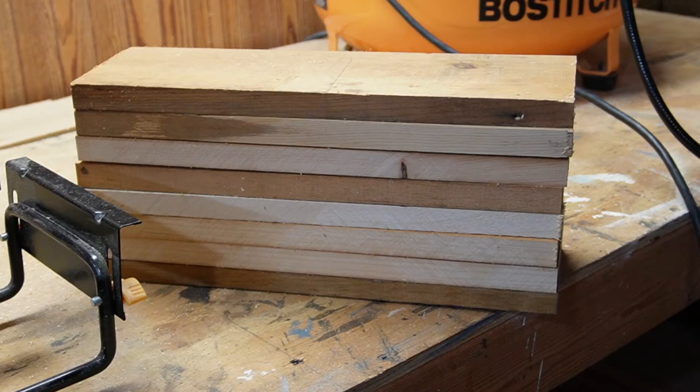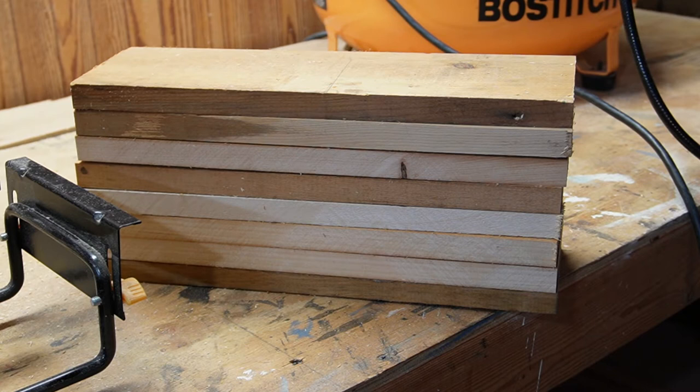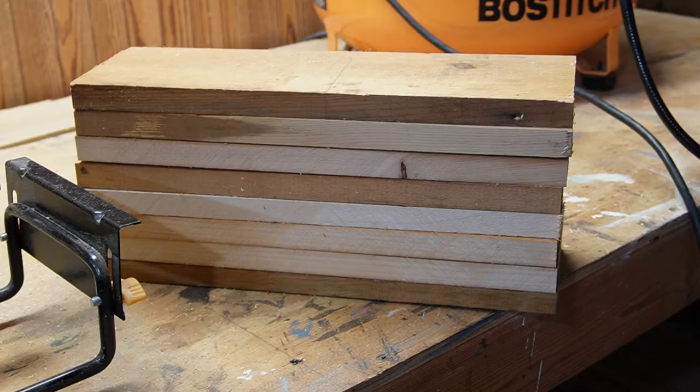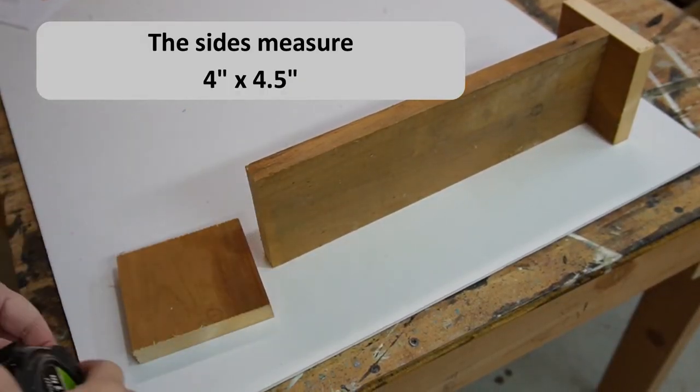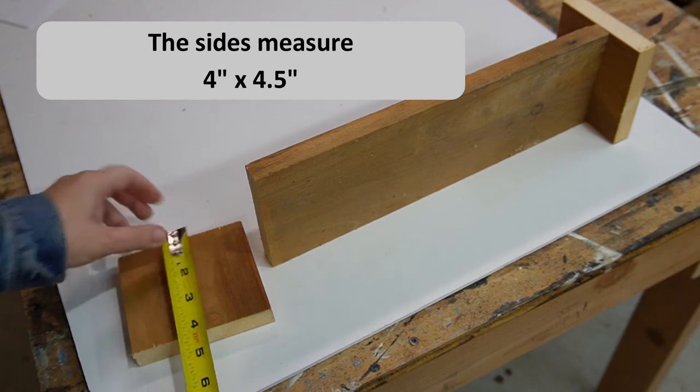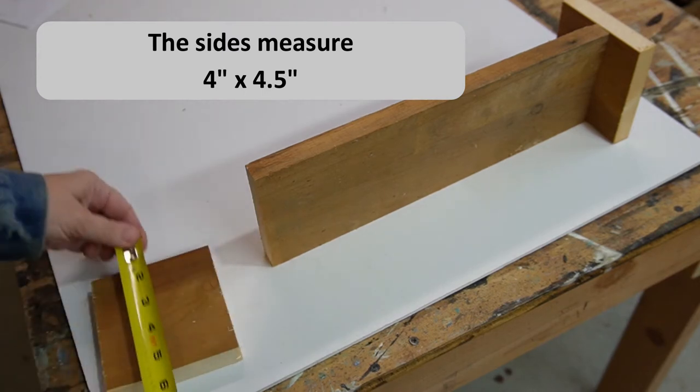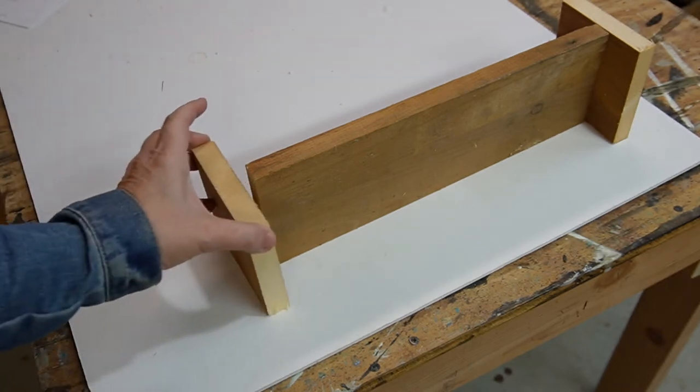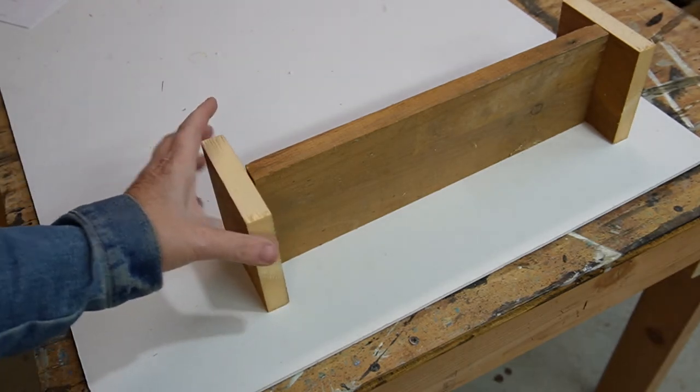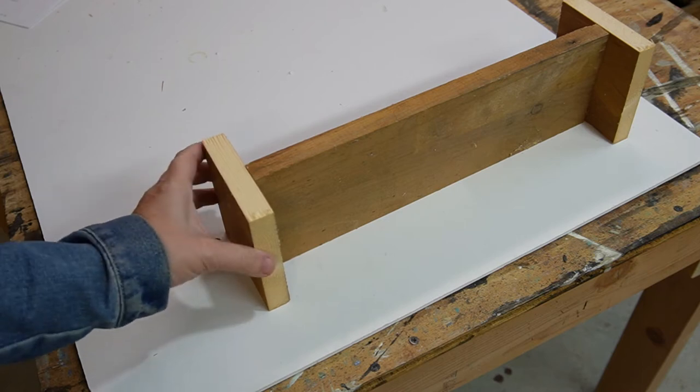So now I have a stack of boards and they're evenly cut at 14 inches long. Next I'm going to be cutting the sides for the egg holder. The sides measure four inches by four and a half inches. And they'll just go like that. We will glue and then nail them in.